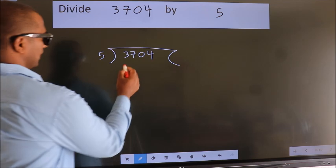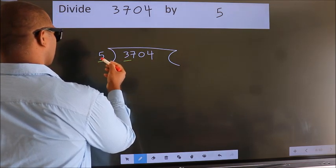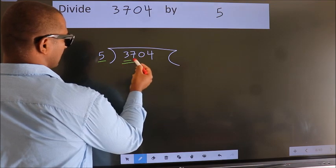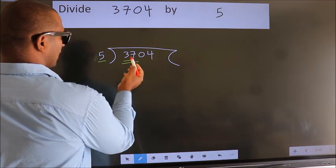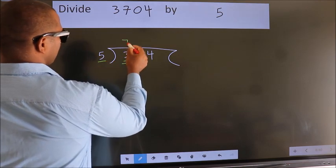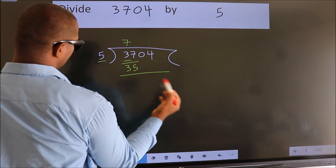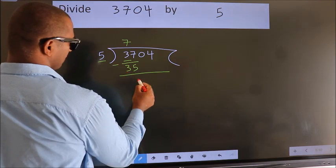Here we have 3. Here 5. 3 is smaller than 5. So we should take 2 numbers, 37. A number close to 37 in the 5 table is 5 times 7 equals 35. Now we should subtract. We get 2.